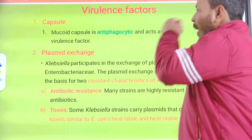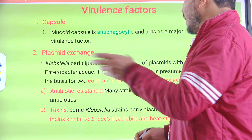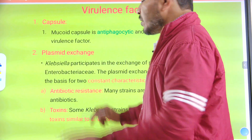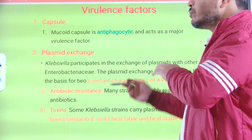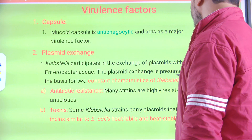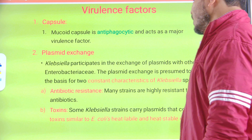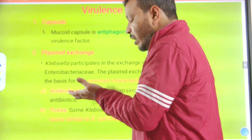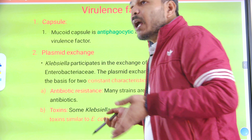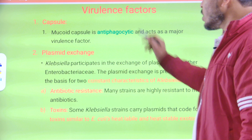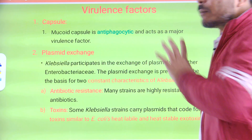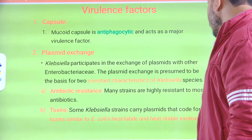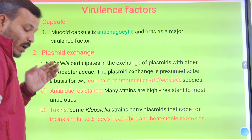Another virulence factor is plasmid exchange. Klebsiella may exchange plasmids with other pathogenic enterobacteria, and these plasmids carry pathogenicity factors. Klebsiella participates in plasmid exchange with other Enterobacteriaceae, which is presumed to be the basis for two characteristics: first, antibiotic resistance — acquiring resistance plasmids from other enterobacteria makes Klebsiella antibiotic resistant, and many strains are highly resistant to most antibiotics; second, toxin production — some Klebsiella strains carry plasmids encoding toxins similar to E. coli heat-labile and heat-stable exotoxins.